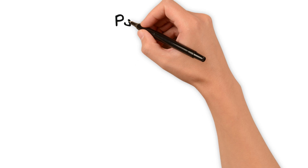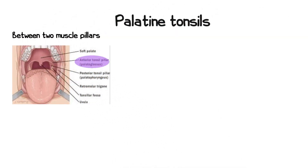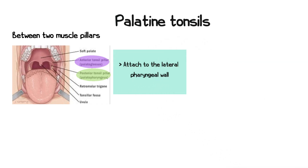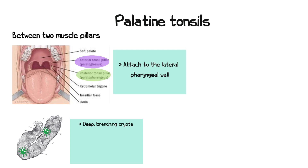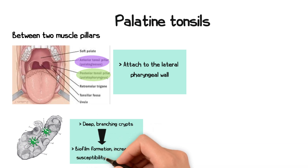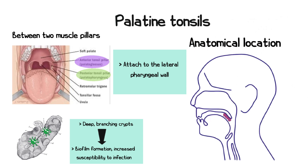The palatine tonsils are situated between two pillars of muscle — the palatoglossus anteriorly and the palatopharyngeus posteriorly — and they attach to the lateral pharyngeal wall. In contrast to other structures of Waldeyer's ring, the palatine tonsils have deep branching crypts that can trap bacteria, food, and debris, leading to biofilm formation and increased susceptibility to infection. Their anatomical position exposes them to both airborne and ingested pathogens, further contributing to their role in frequent infections.